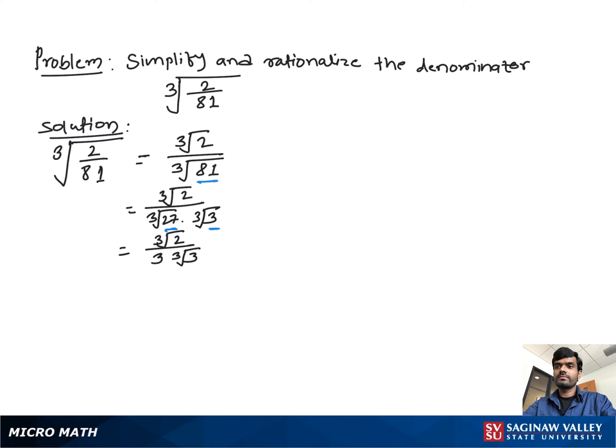We have to make a rational number at the denominator. To remove the cube root sign, we multiply by cube root 9 in both numerator and denominator, which gives us a perfect cube root at the denominator.